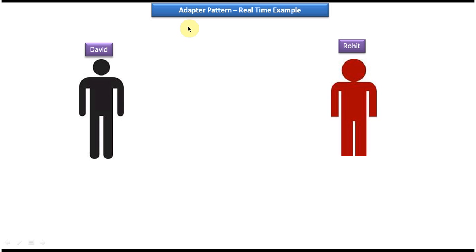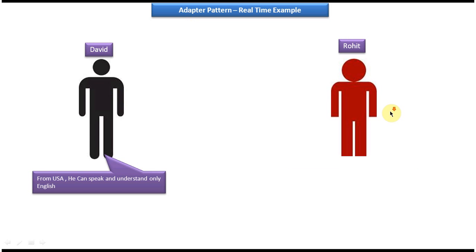Now we will see one real time example of adapter design pattern. On the left side you can see David is a person and Rohit is a person. This David is from USA and he can speak and understand only English, and this Rohit is from France so he can speak only French. Also he can understand only French, and this David doesn't know French, also this Rohit doesn't know English.